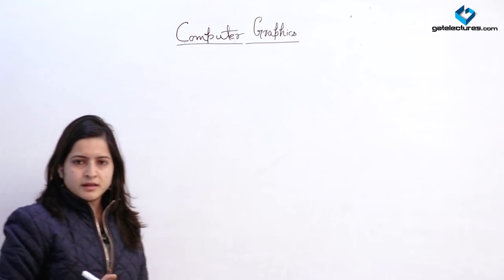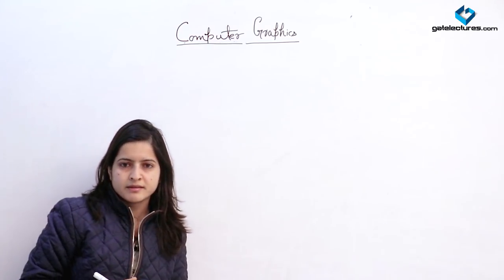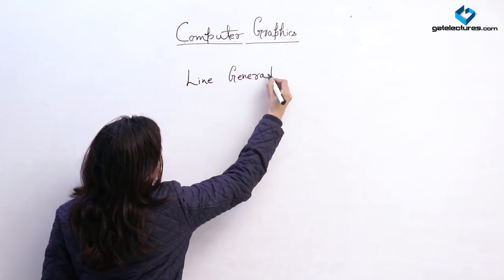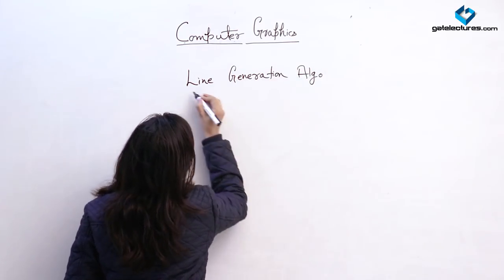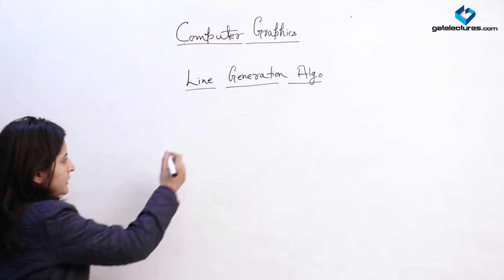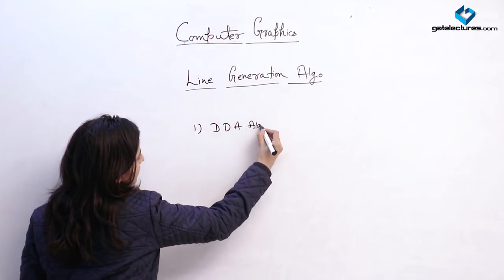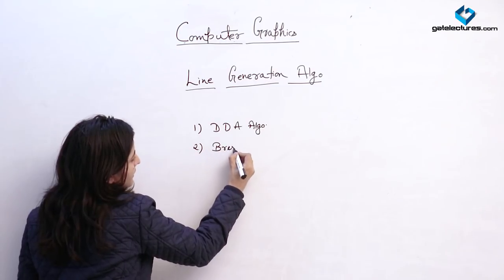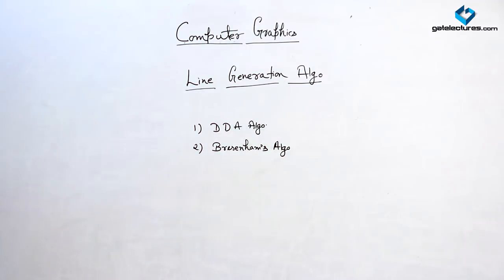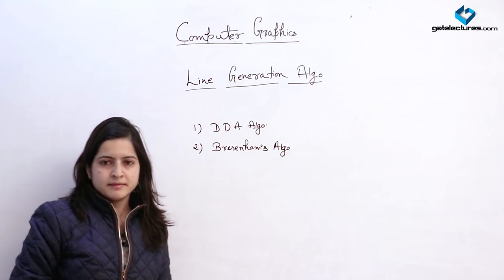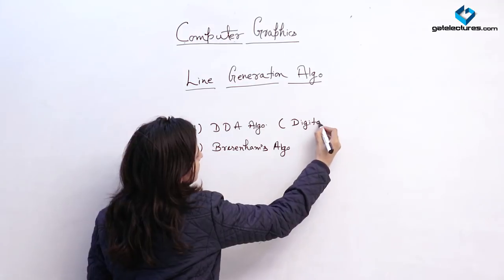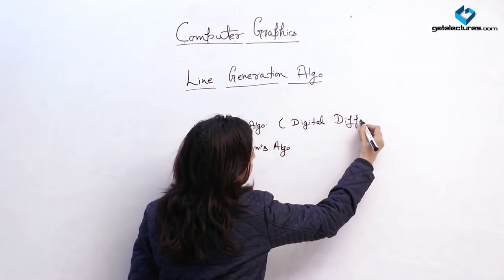We have some algorithms for selecting nearby pixels to form a line. From the various objects we are discussing today, we start with line generation algorithms. There are various algorithms for forming a line in a computer graphical device, but generally the two important ones are the DDA algorithm and Bresenham's algorithm. These two line generation algorithms are based on formulas through which we select the pixels.